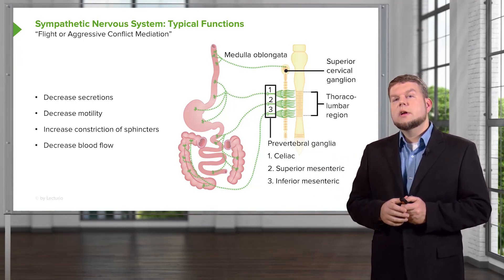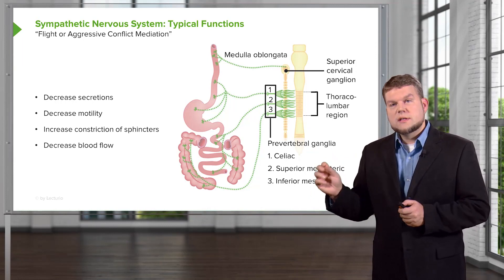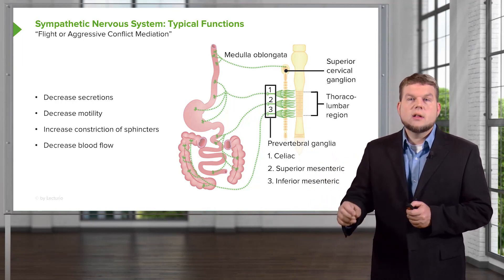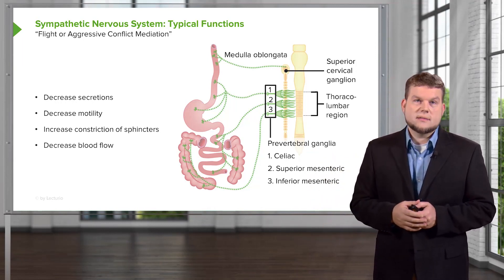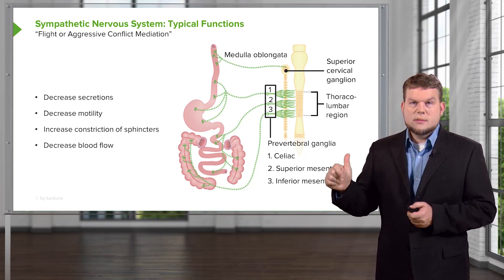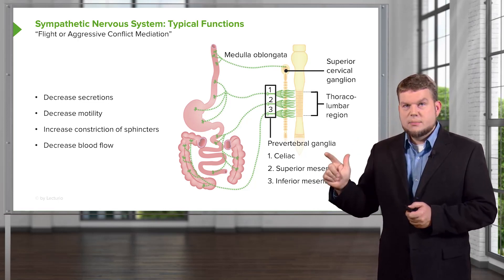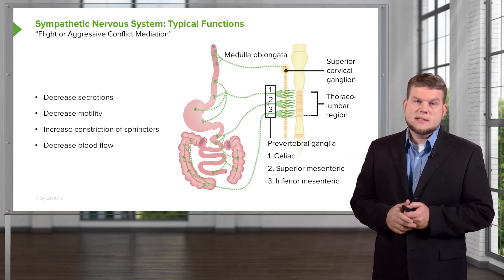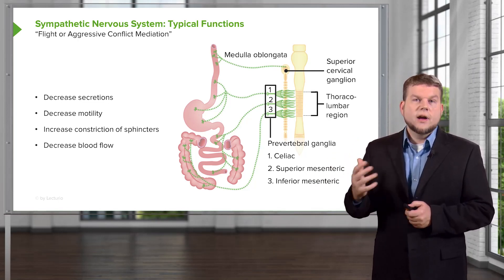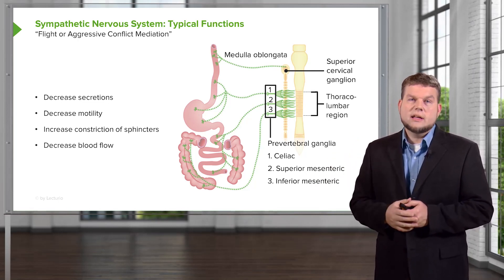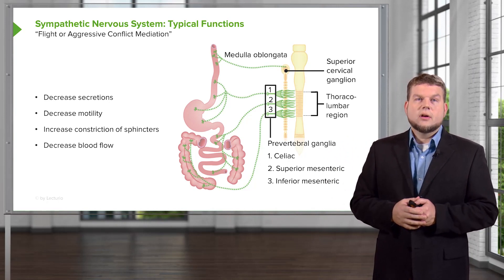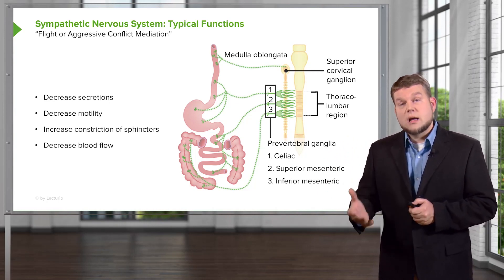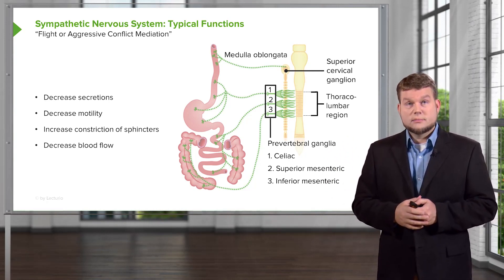So that you get more information to the stomach, the small intestine, and the large intestine. Parasympathetic and sympathetic systems are very important in undergoing our digestion or stopping digestion from occurring.